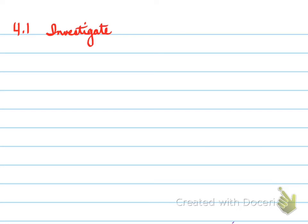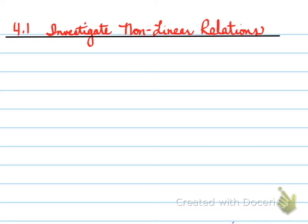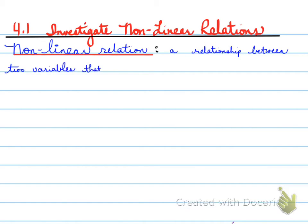All right, 4.1, investigate nonlinear relations. A nonlinear relation is a relationship between two variables that does not follow a straight line when graphed.